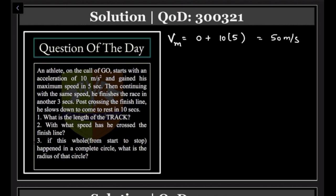Then he continues with the same speed and finishes the race in another 3 seconds. So the total time the race he ran is 8 seconds, 5 plus 3.